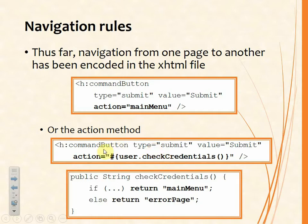Alternatively, what we might do on the command button is to set the action equal to some kind of action method in a managed bean. That action method has the responsibility of returning a string with the name of the next view to render. From check credentials, we might return the string 'main menu' so that successful credential checking will result in the main menu being displayed.